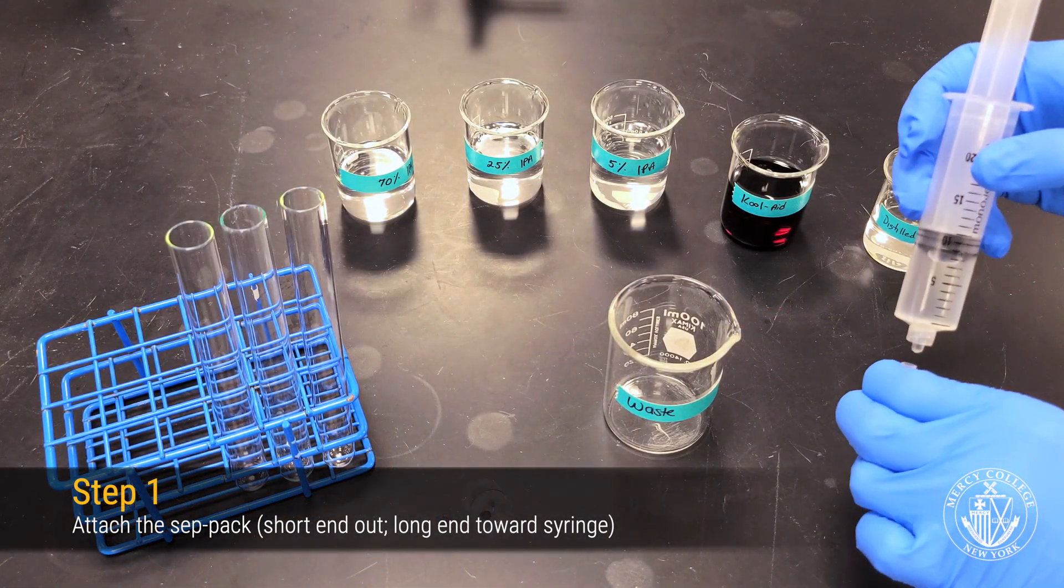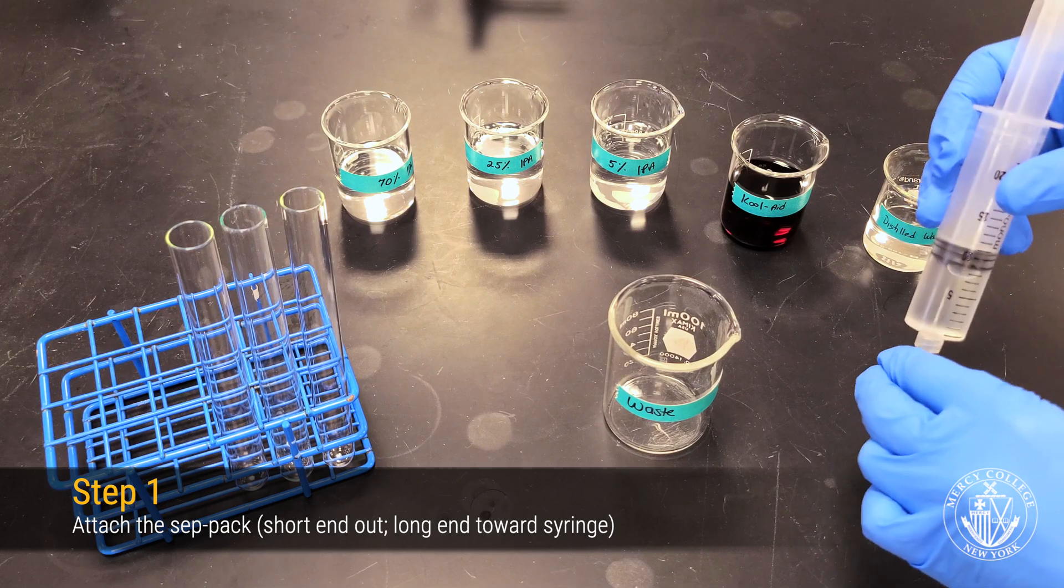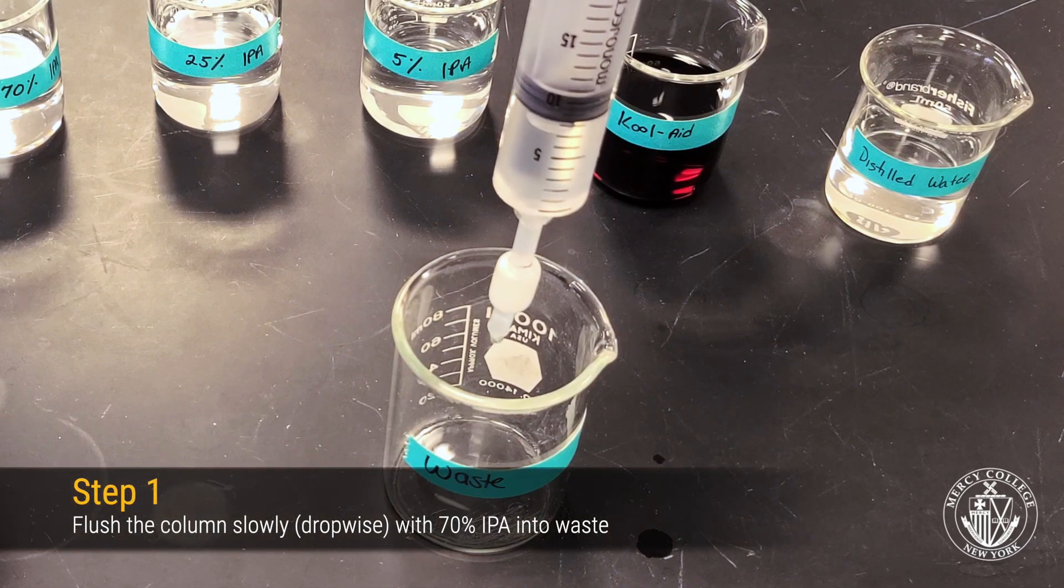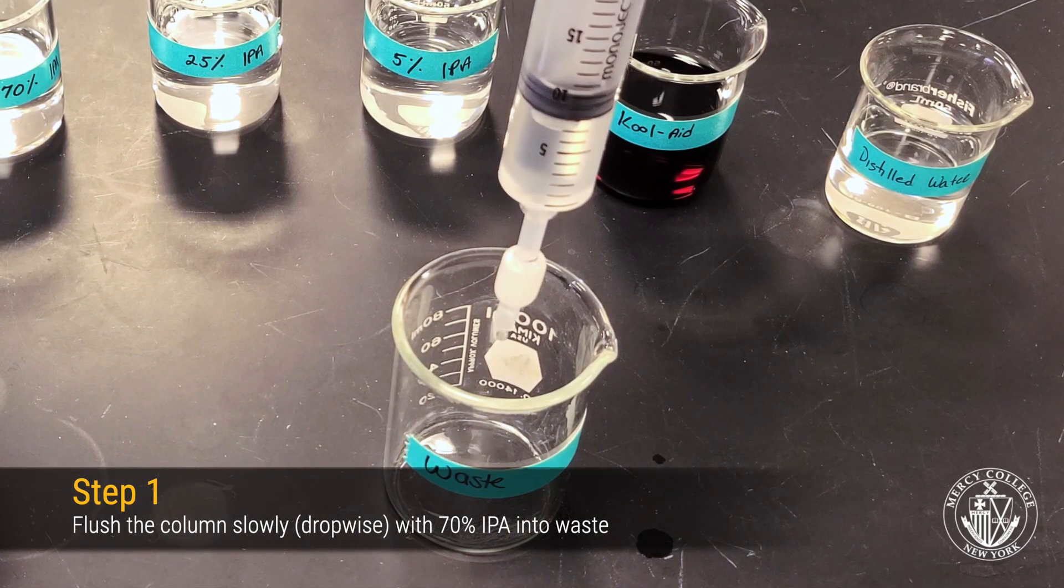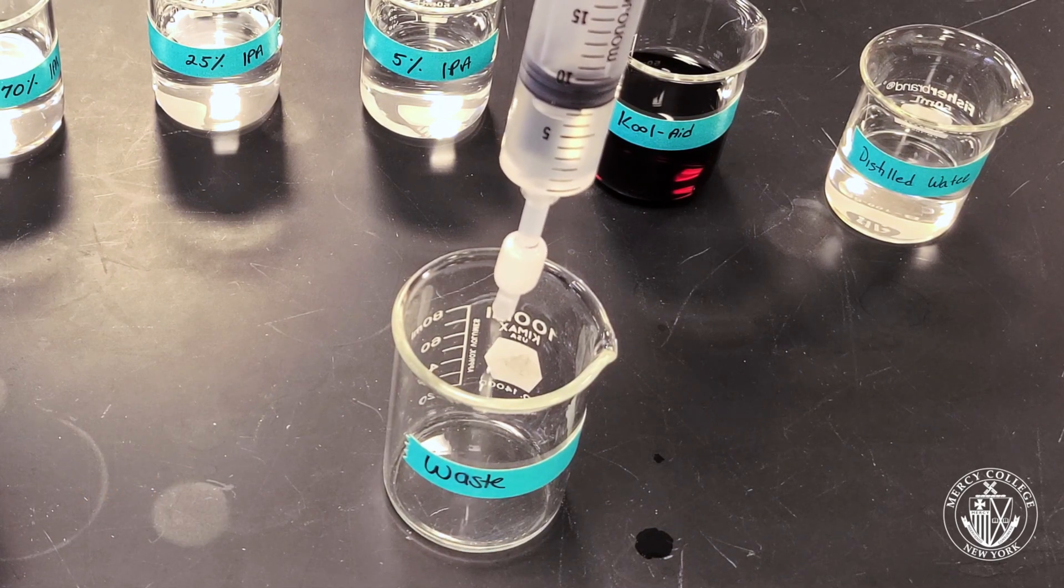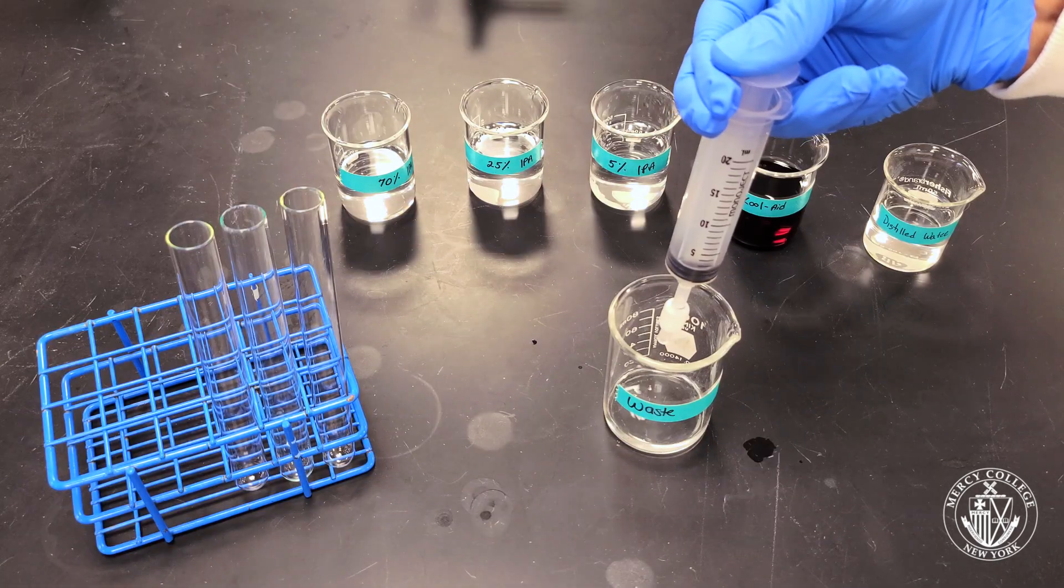Firmly secure the CEPPAC cartridge to the front of your syringe, making sure that the long side of the cartridge is pointed toward the syringe. Now slowly push the 70% IPA through the CEPPAC column drop-wise. Go slowly and avoid applying too much pressure so that you don't damage the column.